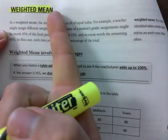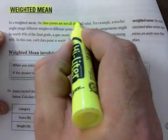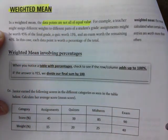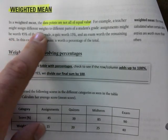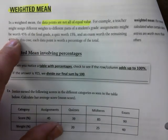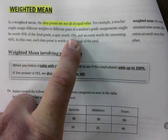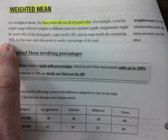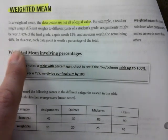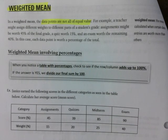What is weighted mean? You put weights on different categories. That's really what it is. Data points are not all equal in value. For example, a teacher may assign different weights to different parts of a student's grade. You might have assignments worth 45% of the final grade, the quiz is 15, and the exam may be worth 40%. If you take sciences at university, your final exam could be worth 40 to 50 or 60% of the grade.